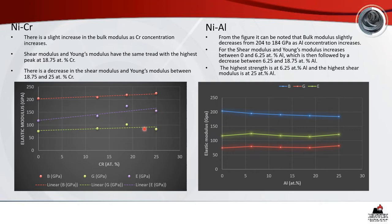Looking at the nickel-aluminium mechanical properties, the bulk modulus slightly decreases from 204 to 184 GPa as aluminium concentration increases. For the shear modulus and Young's modulus, there is an increase between 0 and 6.25 atomic percent aluminium, followed by a decrease between 6.25 and 18.75 atomic percent aluminium. The highest strength is at 6.25 atomic percent and the highest shear modulus is at 25 atomic percent aluminium. From these two graphs, nickel-chrome alloys have the greatest strength compared to nickel-aluminium alloys.